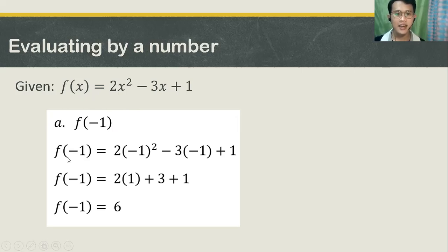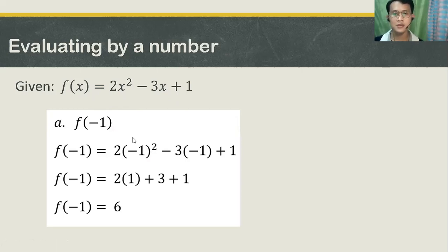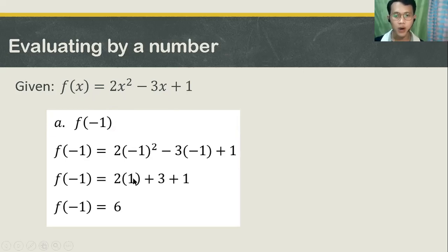It will now become f of negative 1, which is equal to 2 times the quantity negative 1, squared, minus 3 times the quantity negative 1, plus 1. Negative 1 squared equals 1, so we have 2 times 1 plus negative 3 times negative 1, that is positive 3.